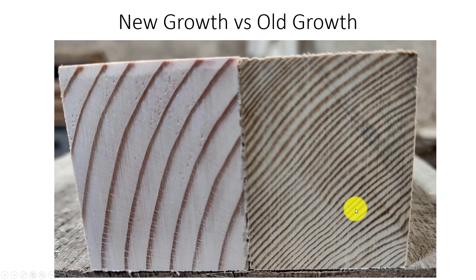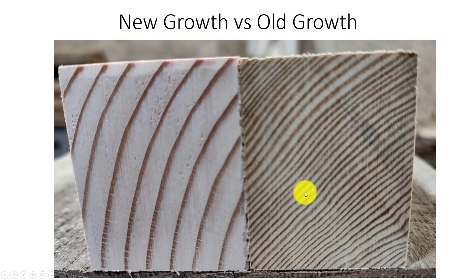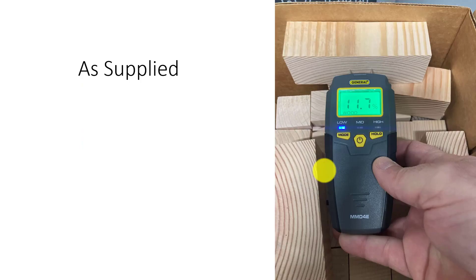New growth versus old growth: old wood has tighter grain rings — two colors per year of annual growth. New growth wood has much wider ring spacing, meaning the tree grew really fast in fewer years. From a return-on-investment standpoint, you can cut new growth down in 15 to 20 years and replant, versus old growth which takes many more years. We've cut a lot of old growth and are now working with new growth wood, so different species and specimens will have different properties.